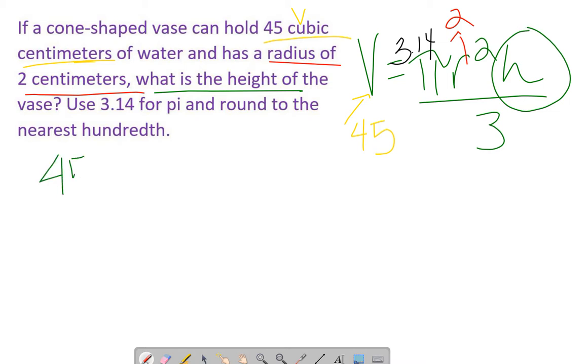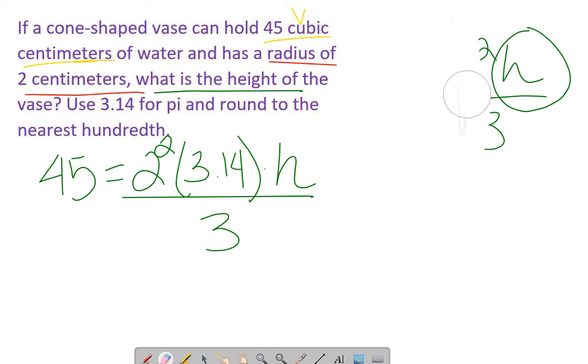Let's do this. We've got 45 equals πr²h/3. So r is 2, giving us 45 equals 2² × 3.14 × h divided by 3. All we did was take the volume formula and plug in all the information the problem gave us.